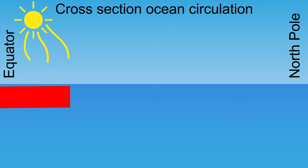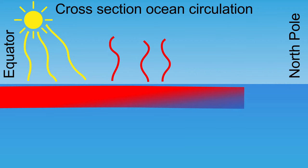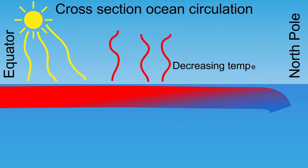Seawater warms up at the equator, then it flows towards the North Pole. Along the way, the ocean currents emit a lot of heat, which warms the atmosphere but cools the water itself.